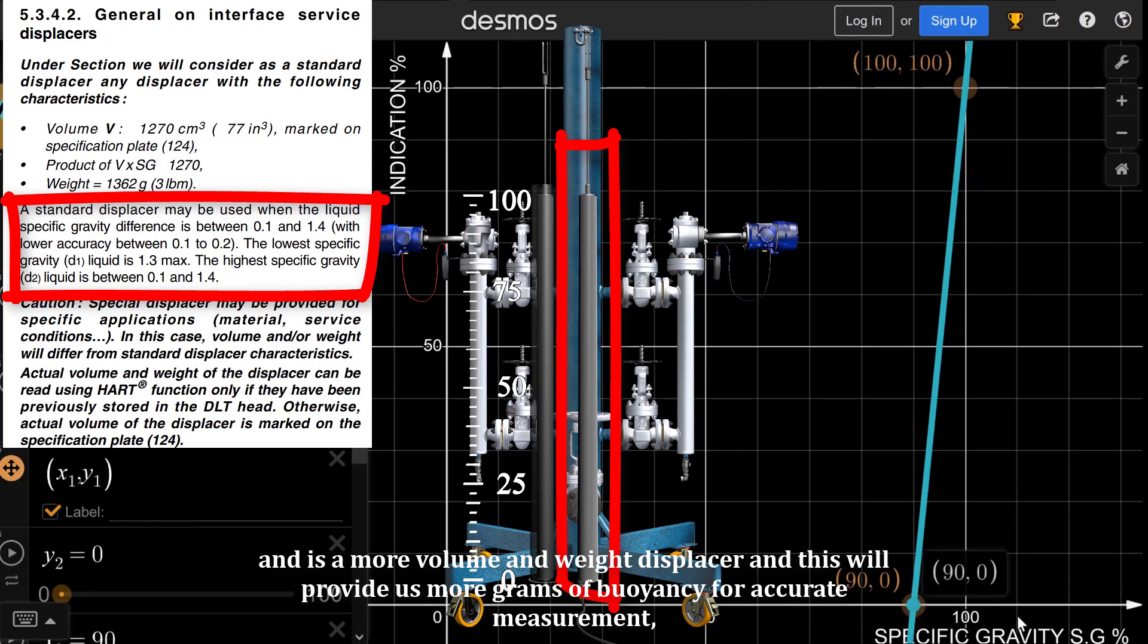Here is the solution proposed by Masoneilan, and it is a more volume and weight displacer, and this will provide us more grams of buoyancy for accurate measurement.